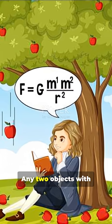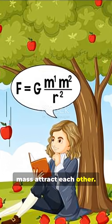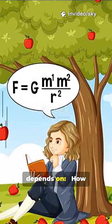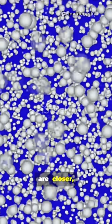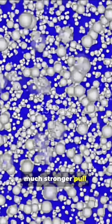Newton said that any two objects with mass attract each other. The strength depends on how massive they are, bigger mass, stronger pull, and how far apart they are, closer, much stronger pull. So Earth pulls you down because it's huge and you're close to it.